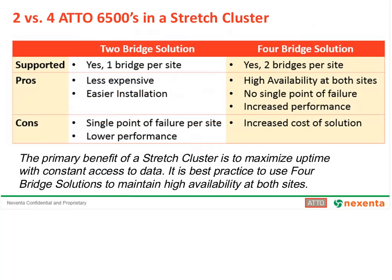Comparing the two configurations: Nexenta has certified the 6500 in both two-bridge and four-bridge configurations. The two-bridge solution provides basic connectivity between sites with some site-level redundancy. Its primary disadvantage is that it introduces a single point of failure — a single bridge failure will take down a site and trigger failover to the secondary. The four-bridge solution rectifies this by adding high availability, so a single site can handle a bridge failure and maintain uptime without failing over. There is an additional cost per site, but the improved reliability also brings the benefit of increased performance.